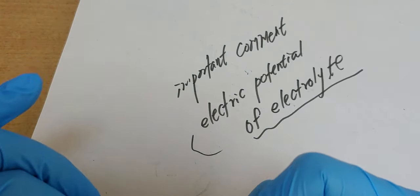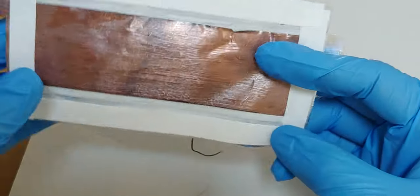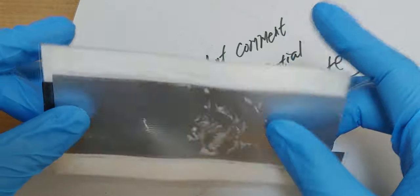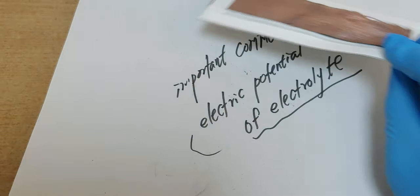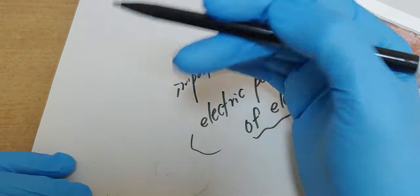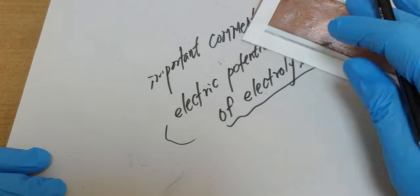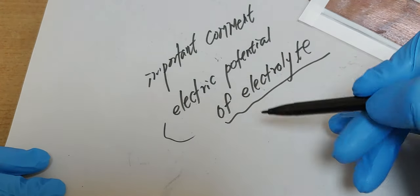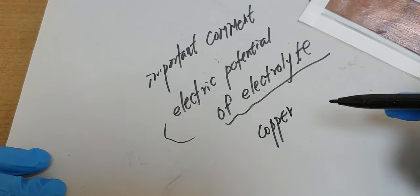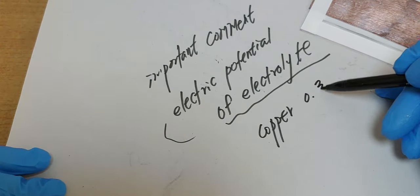So I did one experiment. This is copper and aluminum. As I remember, the electric potential of copper is 0.34.